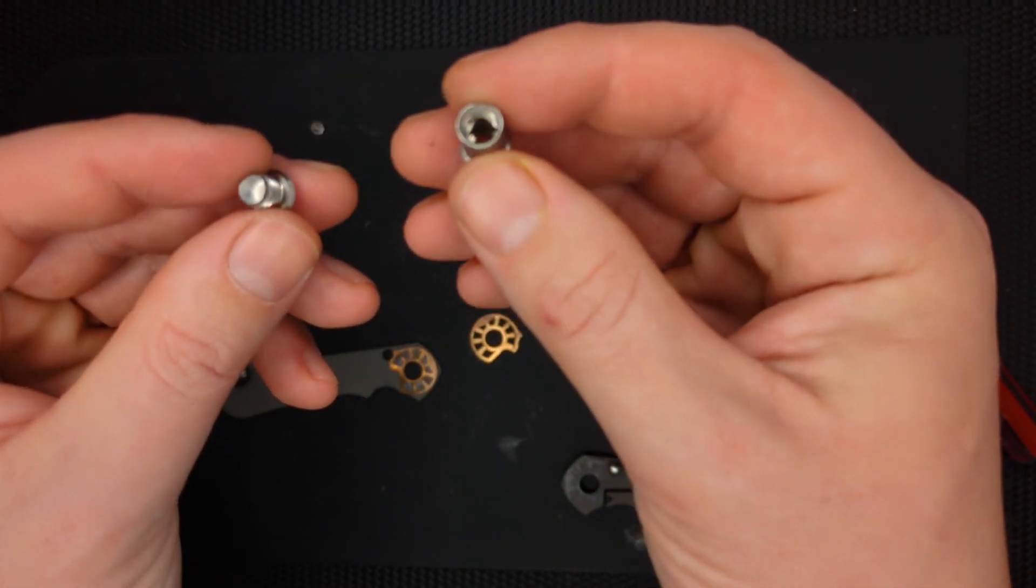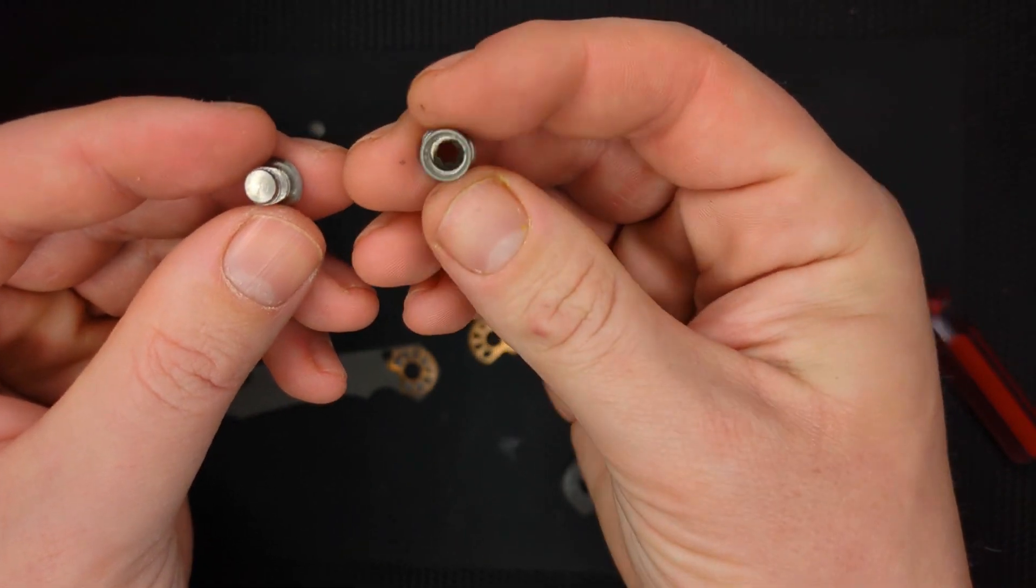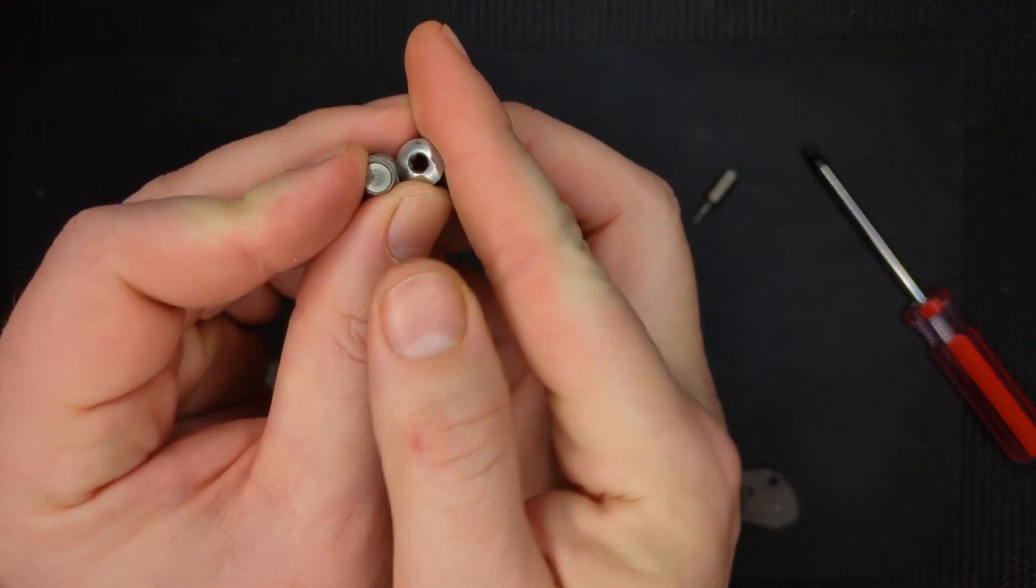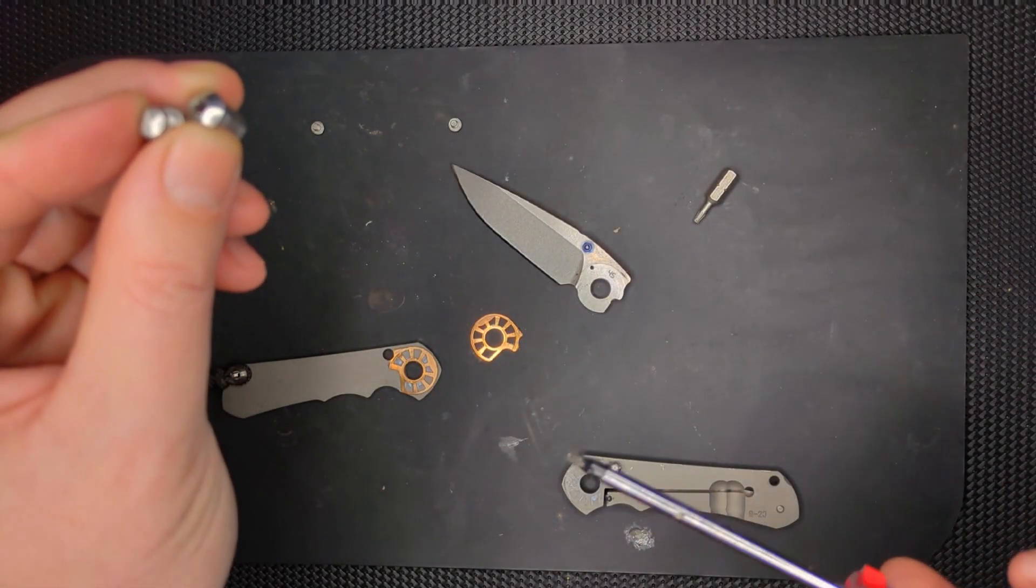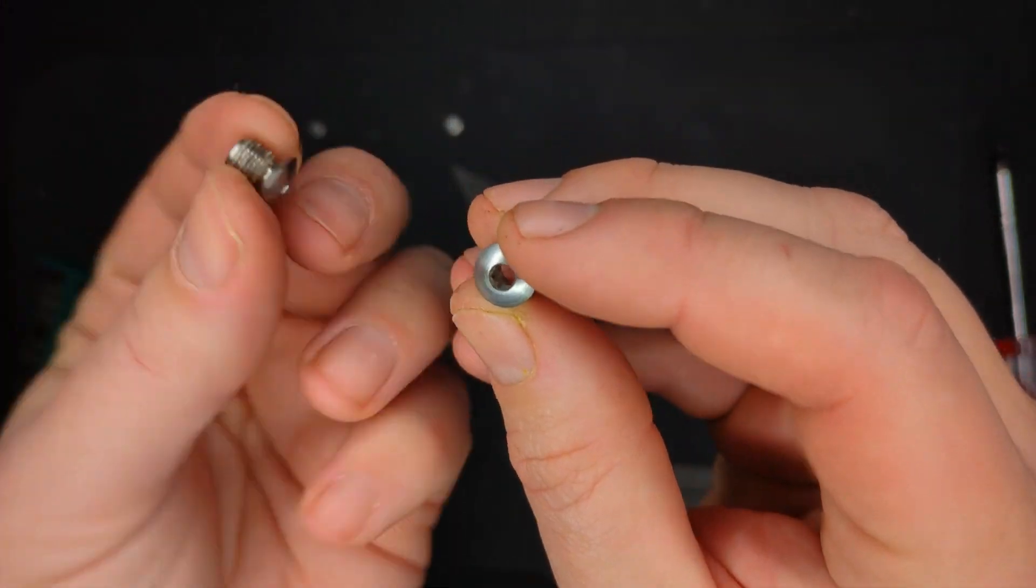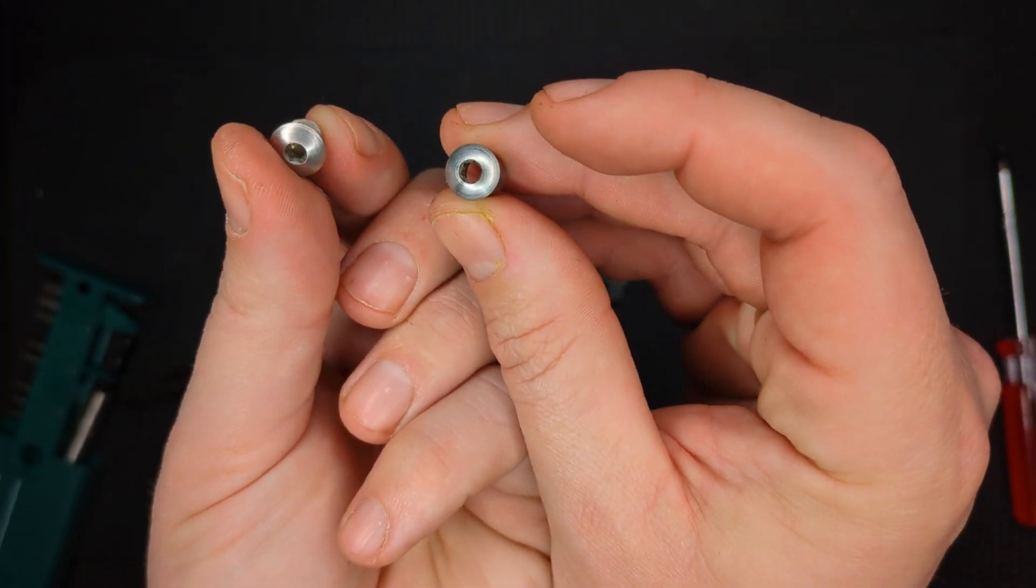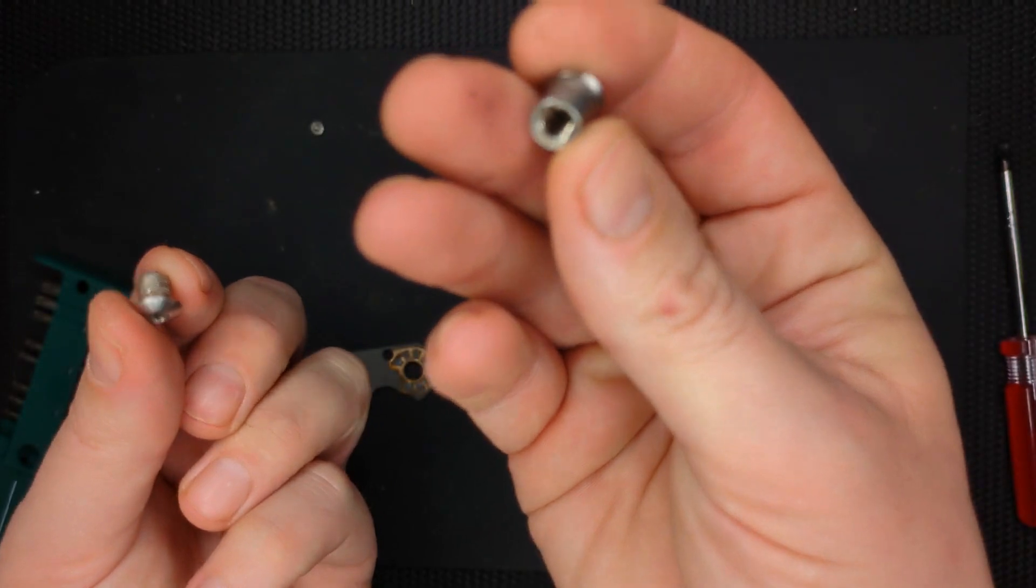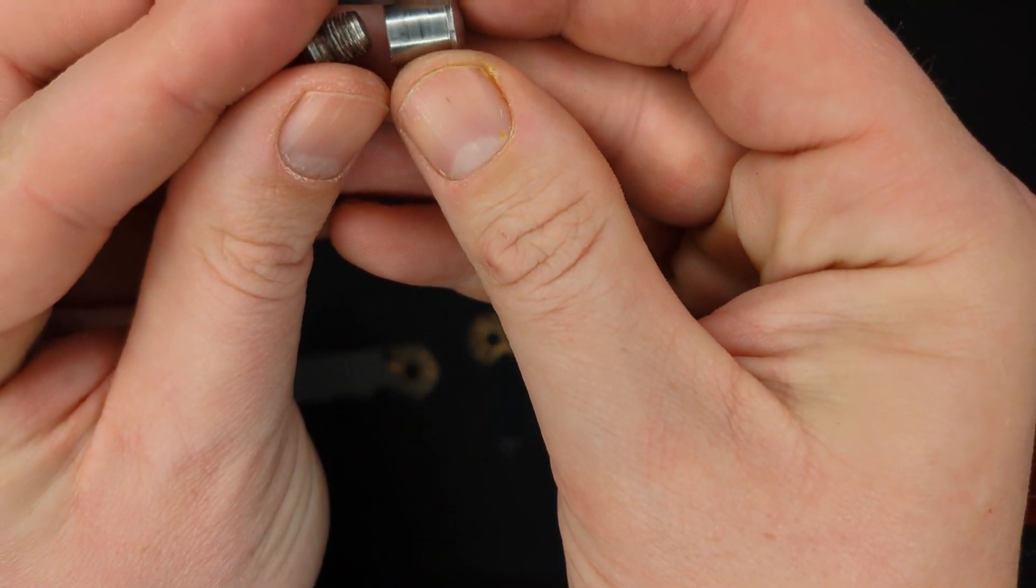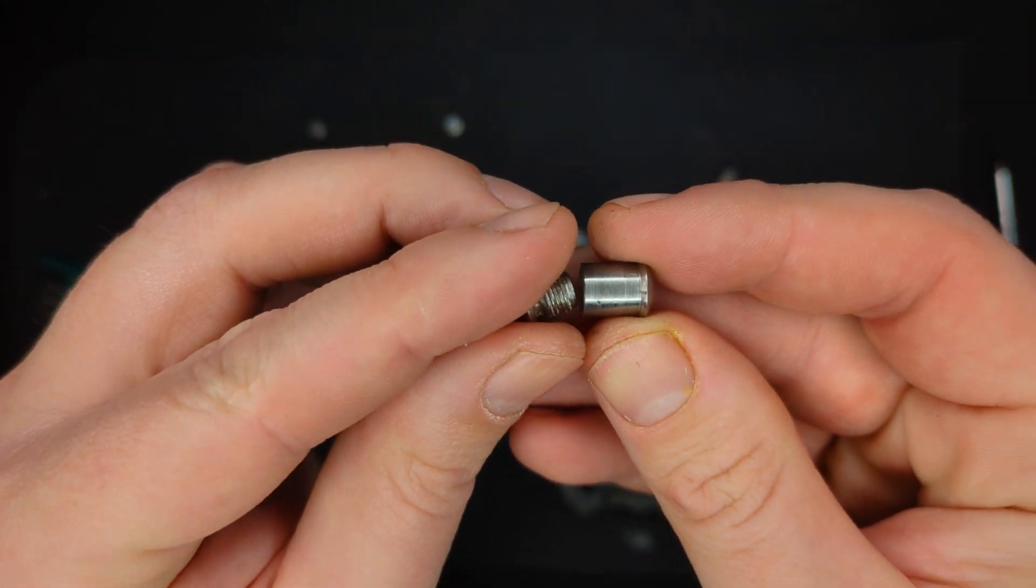So you have a pivot bolt here, which is giant, and I think that this is a T-15, literally one of the largest hex bolts I've ever seen in my life. And it's very precise, and it's very large too. Very, very large pivot.